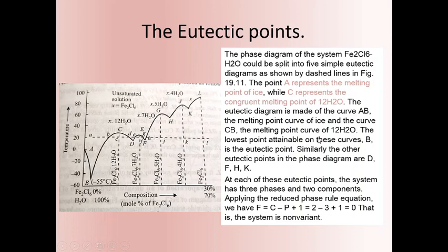The eutectic point is the lowest temperature obtained. The phase diagram for the ferric chloride-water system can be split into five eutectic diagrams, giving five eutectic temperatures. Point B is the first eutectic, with the lowest temperature of minus 55°C. Point A represents the melting point of water, and point C represents the congruent melting point of FeCl₃·12H₂O. Curve AB is the melting point curve for ice, and curve CB is the melting point curve for FeCl₃·12H₂O, with the lowest temperature being minus 55°C.